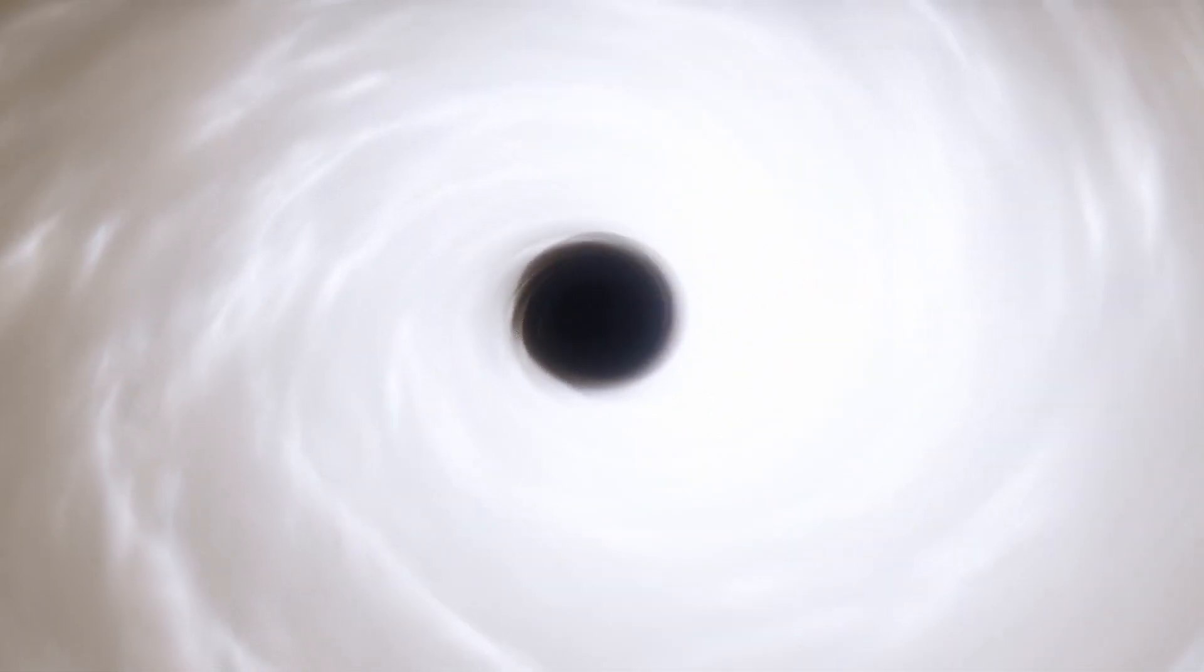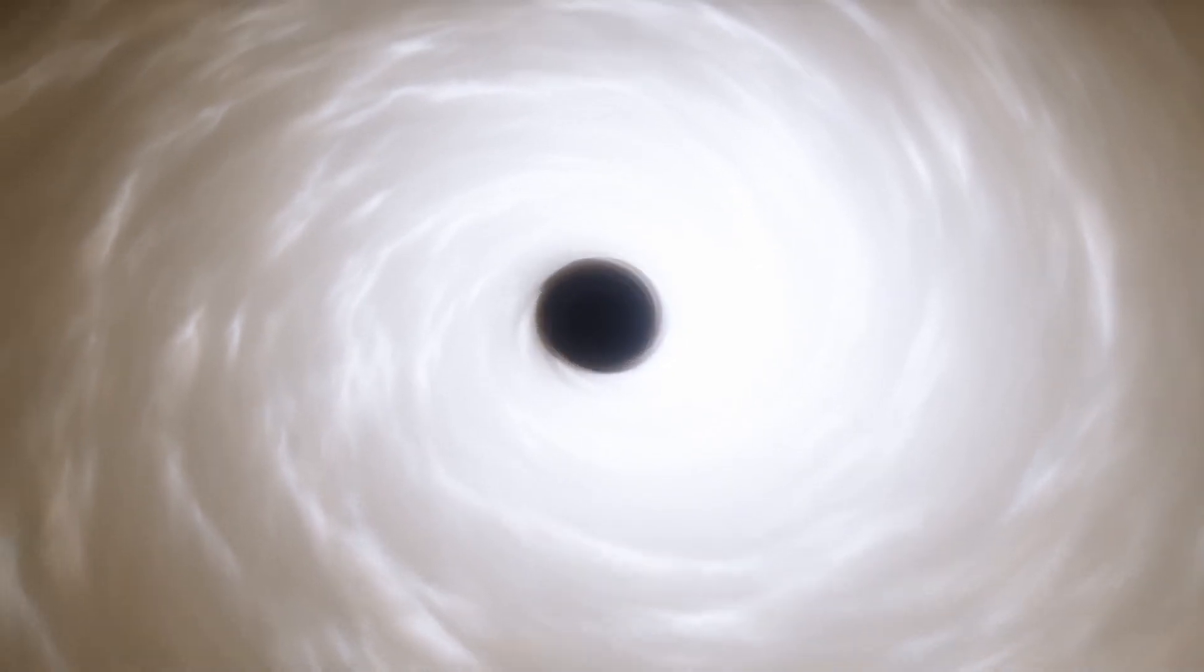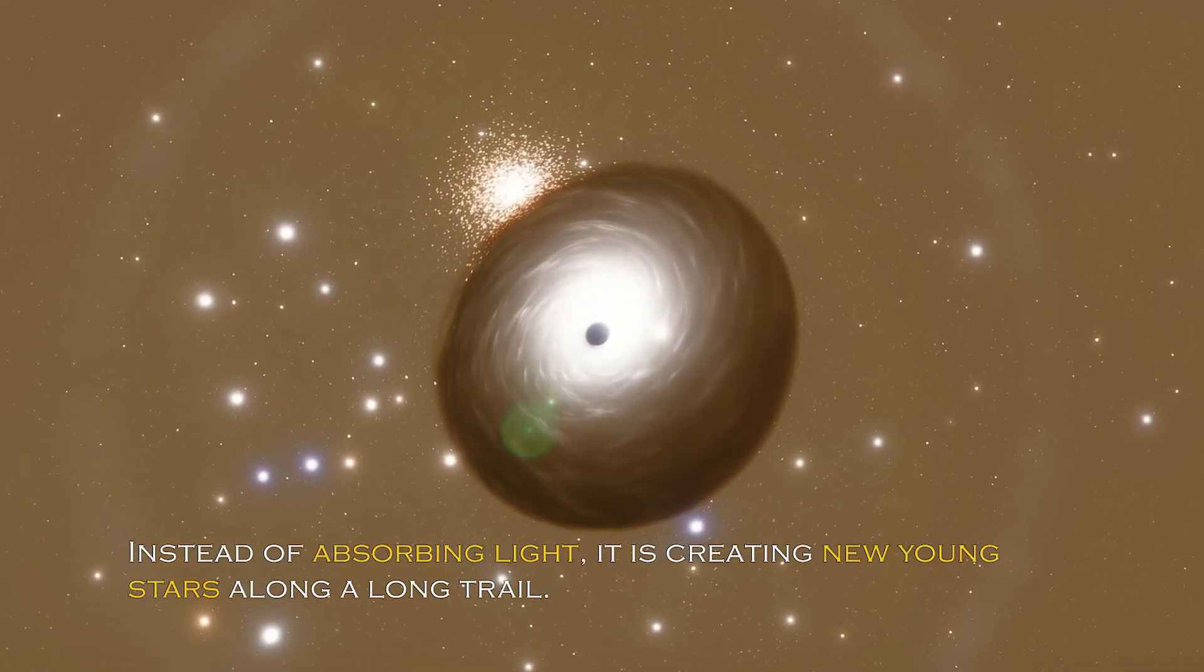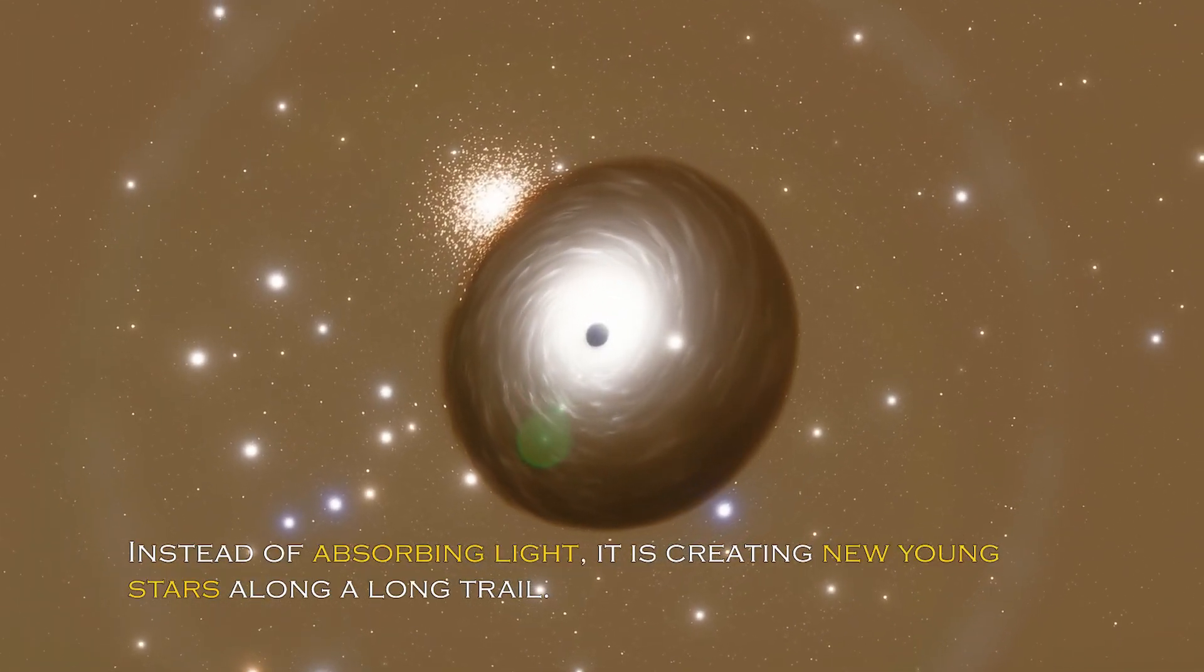Black holes are generally thought of as huge entities that pull everything including light towards them. But the recently observed black hole appears to be having the opposite effect. Instead of absorbing light, it is creating new young stars along a long trail.